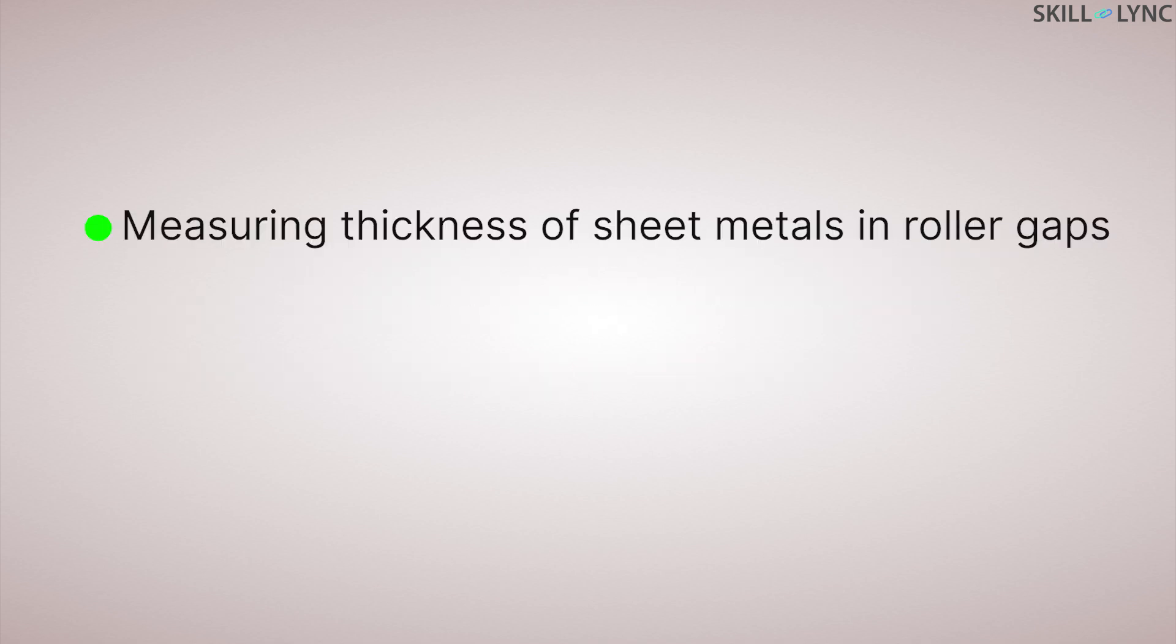Eddy current sensors are relatively small in size and can detect the smallest change in distance. This makes them useful for measuring thickness of sheet metals in roller gaps, machine tool monitoring, final assembling of precision equipment such as disk drives.